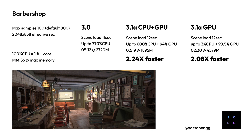The barbershop scene defaults to 800 samples, but I rendered it at 100 samples to keep render times reasonable. Blender 3.0 finished in 5 minutes 12 seconds using 770% CPU and 2,720 MB of memory. Blender 3.1 with CPU+GPU was 2.24 times faster, using about 600% CPU and 90.94% GPU, finishing in 2 minutes 19 seconds.